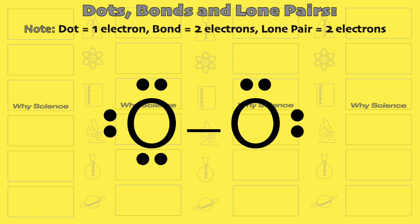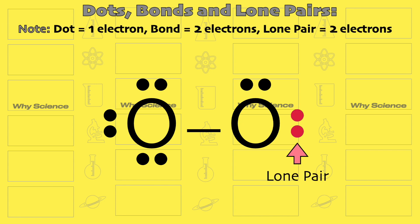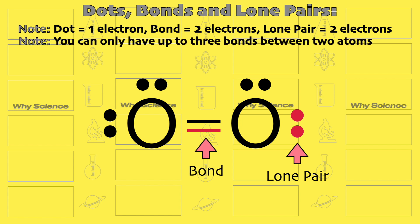There are some exceptions, like hydrogen, which only prefers 2. We also have to know that one dot counts as one electron, and a lone pair is two dots that are not bonded. Lone pairs can turn into bonds when needed, drawn as a line which counts as two electrons, and you can have up to three bonds between two atoms.